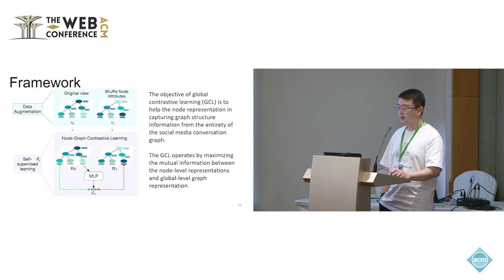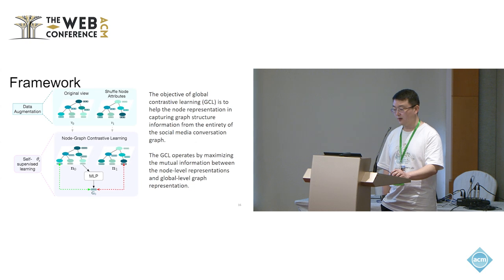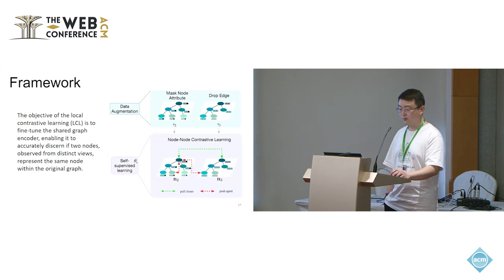In auxiliary tasks, inspired by multi-view contrastive learning, we designed two self-supervised learning tasks: global contrastive learning and local contrastive learning. For the global contrastive learning, it aims to maximize the mutual information between the local node representation and the global graph representation, enabling nodes to obtain the invariant semantics from the graph representation. For the local contrastive learning, it aims to learn a robust node representation of the local nodes by fine-tuning the shared graph encoder through contrastive learning. It enhances the ability to accurately determine whether two nodes are observed from different views.